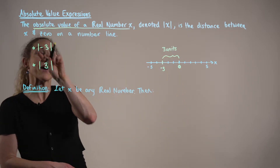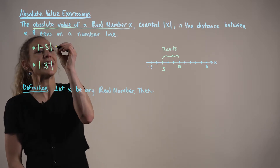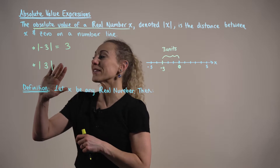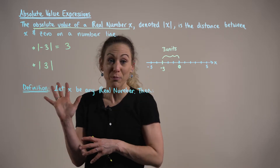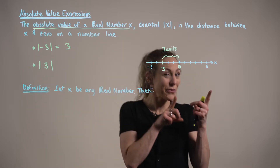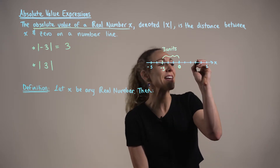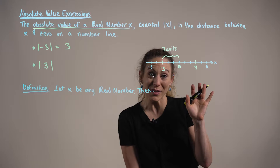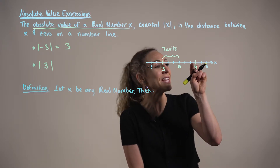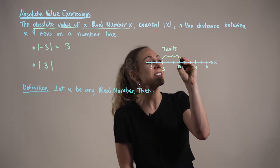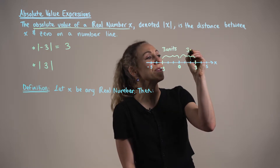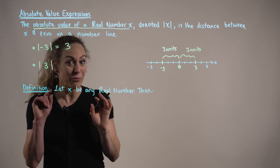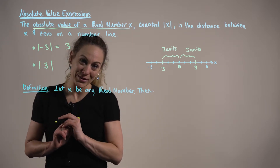We can say that the absolute value of negative three is equal to positive three. Very similarly, if we're thinking about the absolute value of positive three and looking at our number line, we can ask how many units away from zero is three. Counting the length, we can see this is exactly three units away from zero, making the absolute value of positive three also equal to three.